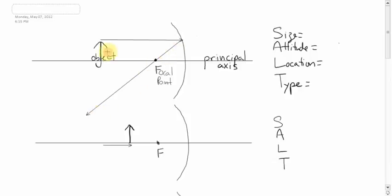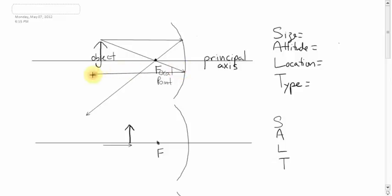The next ray that we show will go from the top of the object through the focal point and bounce back parallel. So again: parallel focal point, focal point parallel. When I say parallel, I'm talking about bouncing back parallel to this imaginary principal axis right here.